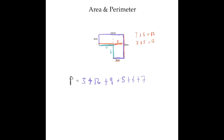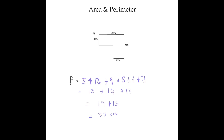Adding all the sides: 3 plus 12 is 15, 9 plus 5 is 14, and 6 plus 7 is 13. Then 15 plus 14 is 29, and 29 plus 13 is 42... so the perimeter is equal to 32 centimeters.